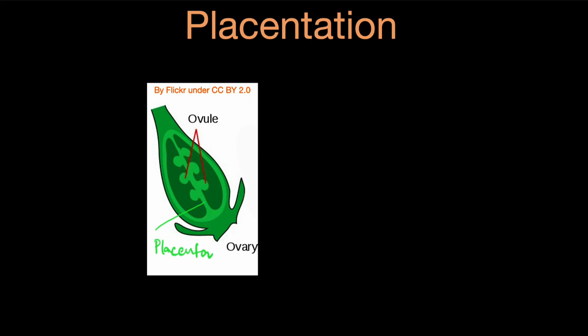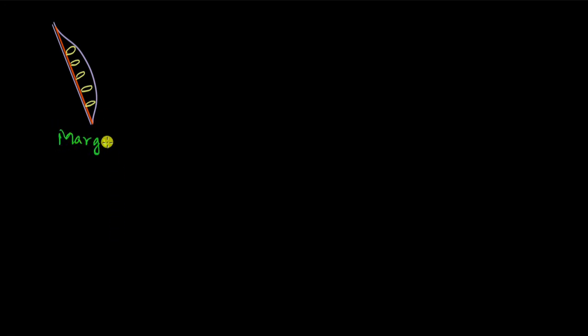Now let's take a look at the different types of placentation found in different types of plants. In the first type, the placenta forms a ridge at one of the margins of the ovary. This is the ovary, and this orange thing is the placenta, which forms a ridge. The ovules are attached to this ridge at the margin. Since the ovules are attached at the margin, this type of placentation is called marginal.